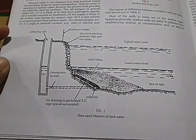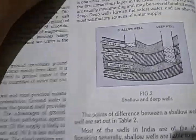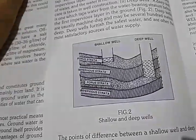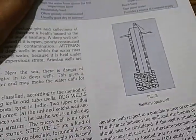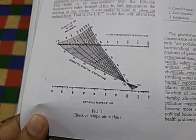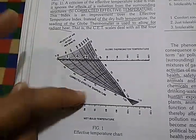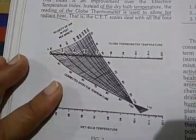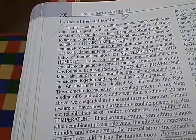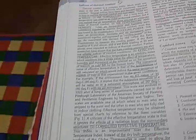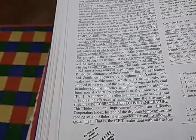There is slow sand filtration of tank filters — they show how to build a shallow well and a deep well, and the differences. A sanitary open well is covered too. Then double pot method, effective temperature chart — corrected effective temperature (CET) relates to thermal comfort, measured with globe thermometer, air temperature, humidity, and cooling power.